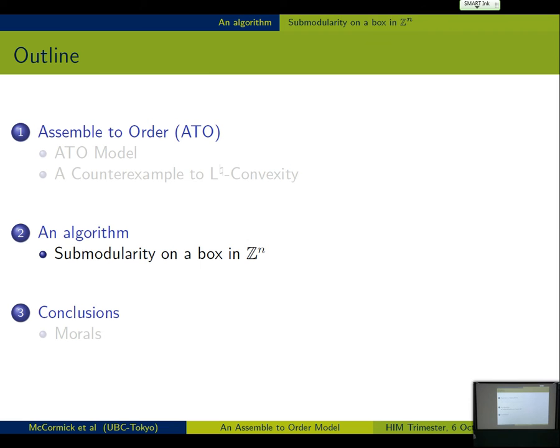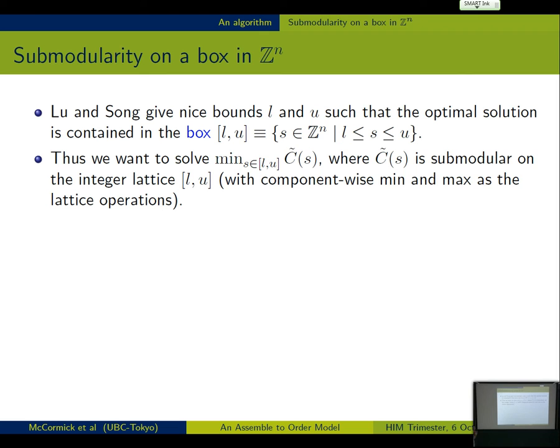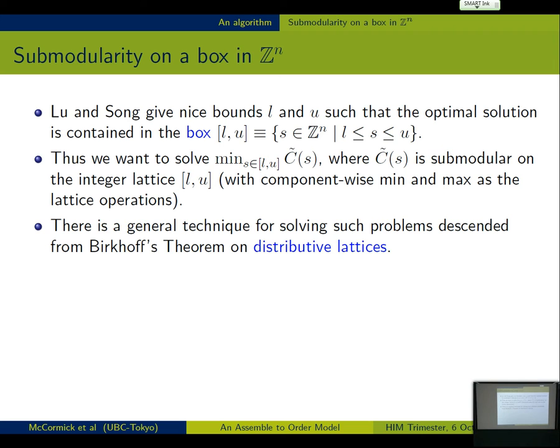So, in the first place, Lu and Song were nice enough to give us bounds, so we can, for sure, bound the optimal solution in a box. Computable box. So, we want to solve a problem on a box where it's submodular. It's an integer lattice with component-wise min and max as the lattice operations. So, there's a general technique for doing this, which is fairly well-known, but not known by so many people, I think. So, let me explain it in some detail. I think, like, these people here know it, but maybe not the rest of the people. So, it was developed by Iri. It's part of his theory of principal partitions. Another version was done by my colleague Maurice Queyranne and Fabio.